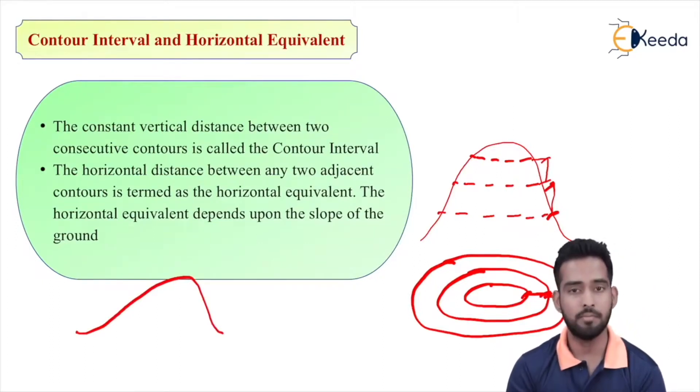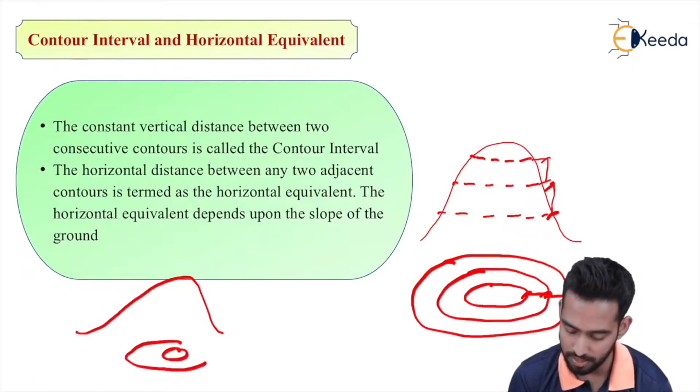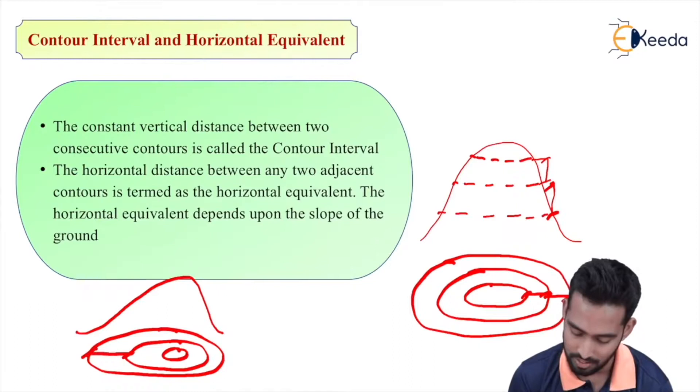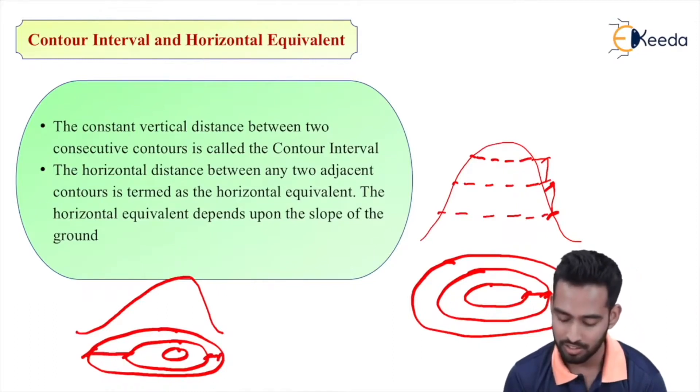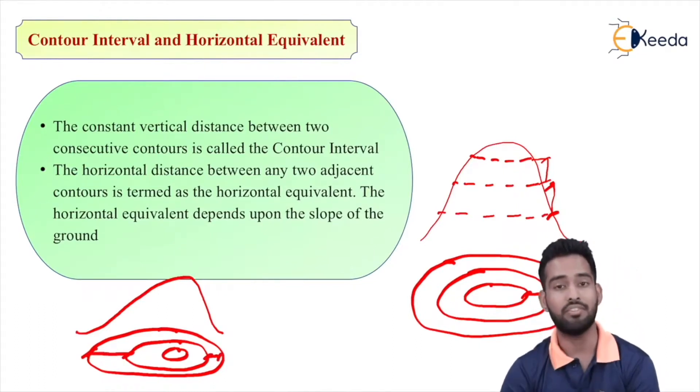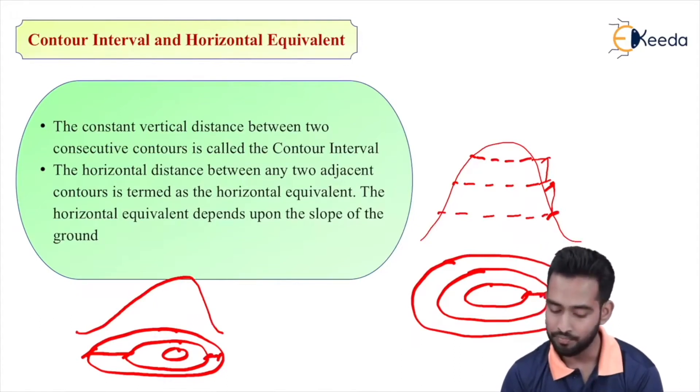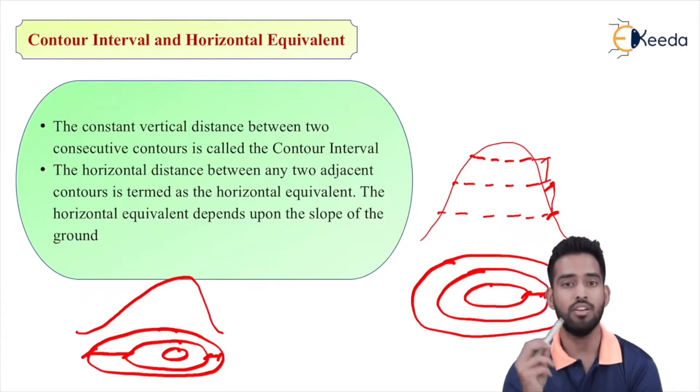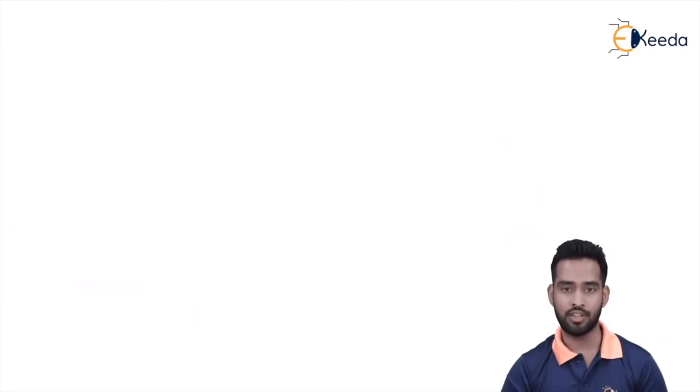Suppose in this case, the mountain is steep at one end and gradual at the other, so your contour will be like this. As we can see between two successive contours, the horizontal equivalent may differ, but the contour interval will be the same for two contours drawn. So contour interval is vertical distance, whereas the horizontal equivalent is horizontal distance between two consecutive contours. Thank you.